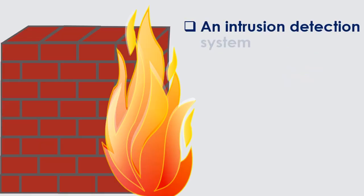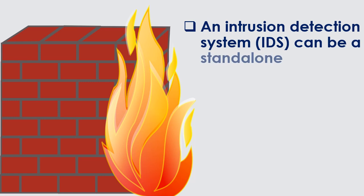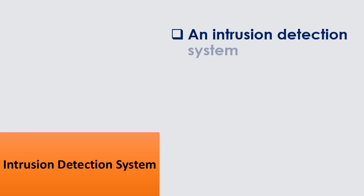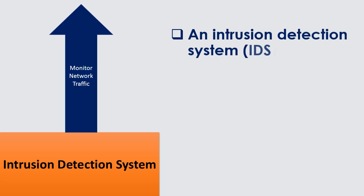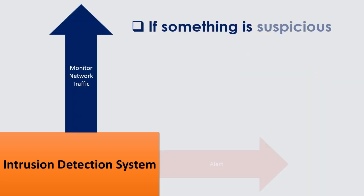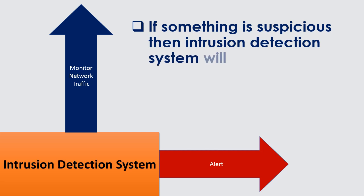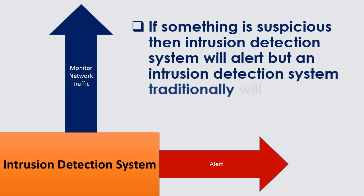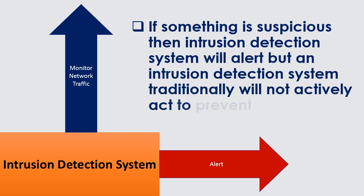An intrusion detection system, IDS, can be a stand-alone device or exist in the functionality within a firewall. Its purpose is to monitor network traffic and or compare file hashes. If something is suspicious, the IDS will alert, but an intrusion detection system traditionally will not actively act to prevent the threat.